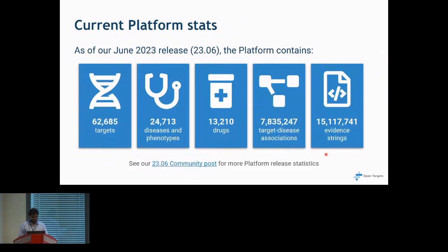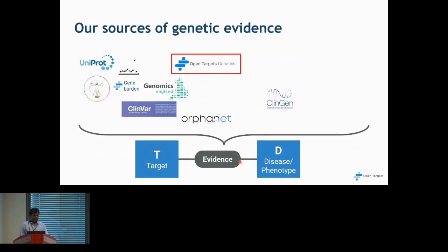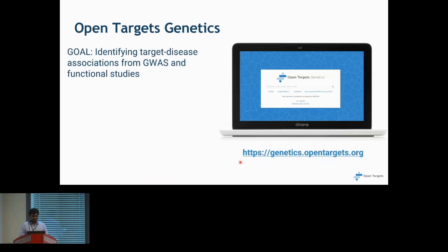Genetics evidence is very important for determining the likelihood of clinical trial success. We have a lot of genetic evidence feeding into our platform, and we also have a separate product called OpenTargets Genetics. We created OpenTargets Genetics with the goal of identifying target-disease associations from GWAS and functional studies. The challenge is: how do you go from a variant associated with a disease to the causal gene? OpenTargets Genetics was established to address that challenge.